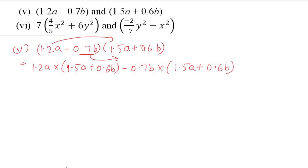Multiplying: 1.2 × 1.5 — compute 12 × 15 = 180, then place the decimal (1 digit each = 2 digits total), giving 1.80a². Then 1.2 × 0.6: 12 × 6 = 72, with 2 decimal places = 0.72ab.